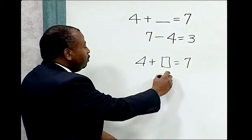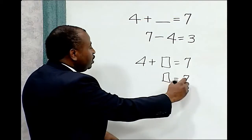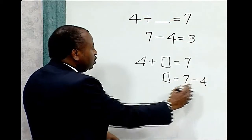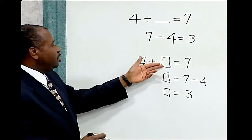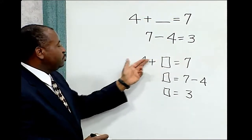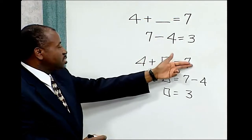Box would therefore equal 7 minus 4. Box equals 3. Therefore, 3 when placed in the box added to 4, when added to 4 equals 7.